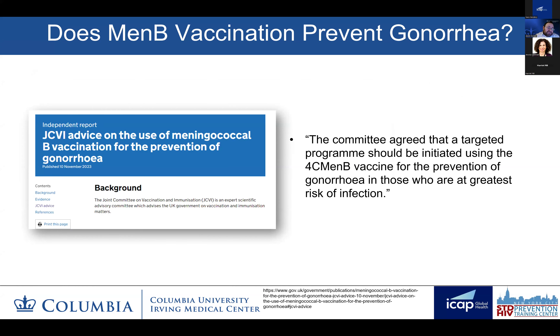The PI of that study said, "At this stage we cannot draw any conclusions regarding the effectiveness of MenB vaccine in preventing the risk of gonococcal infections. It's now necessary to wait for the results of an independent investigation before being able to discuss the potential effectiveness of this vaccine." Interestingly, in the interim, the British Health Service suggested that 4CMenB be offered for the prevention of gonorrhea in those who are at greatest risk of infection.